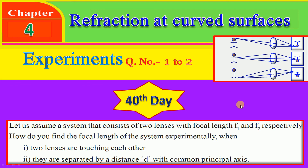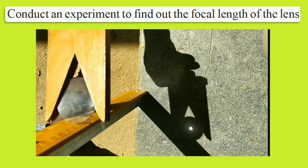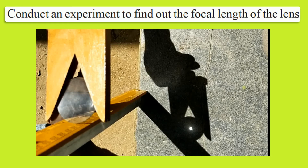First of all, we are going to see the experiment. The first question: conduct an experiment to find out the focal length of the lens. That means, you have been given a lens and you have to find the focal length of that lens. For this purpose, I have taken a V-stand, lens, and scale. By using only these three items, I am going to find the focal length of the lens.